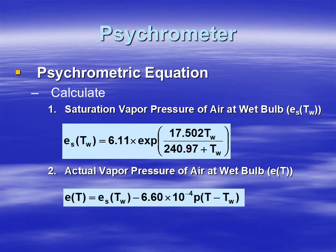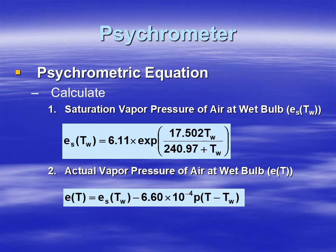Step 1: Use the wet bulb temperature to calculate the saturation vapor pressure of the air at the wet bulb temperature, e_s(T_w), using equation one. Step 2: Apply the psychrometric equation — input e_s(T_w), the atmospheric pressure measured by a barometer, and the temperature difference (T − T_w). Subtract the product of the constant and the depression from e_s(T_w) to get the actual vapor pressure of the air.